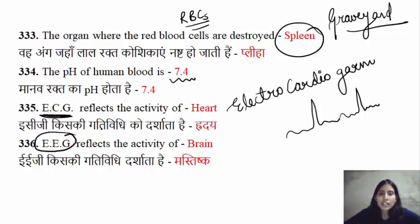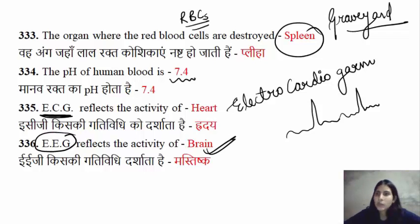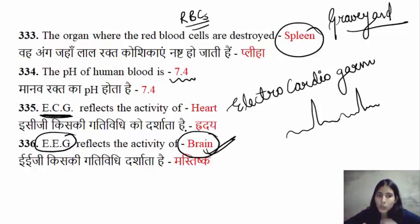EEG — the full form is electroencephalogram. The electroencephalogram records brain activities.